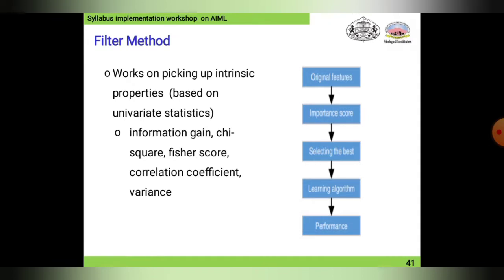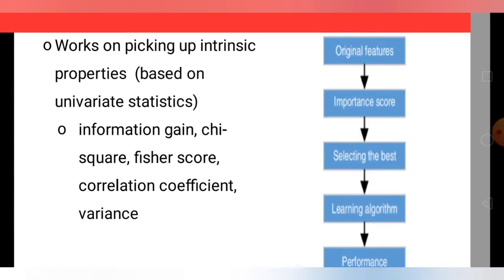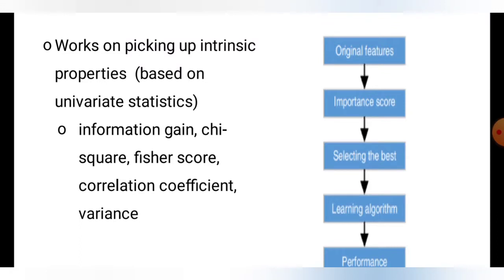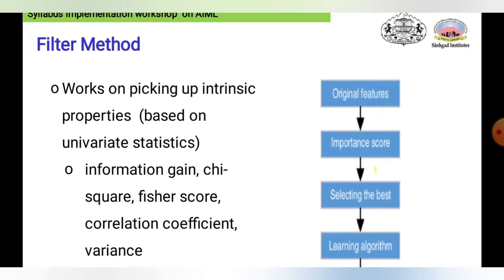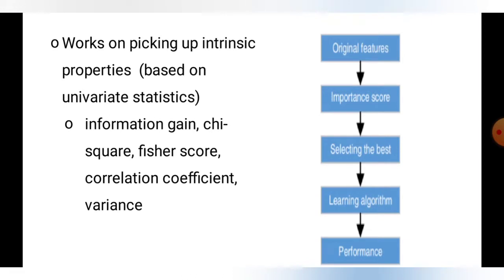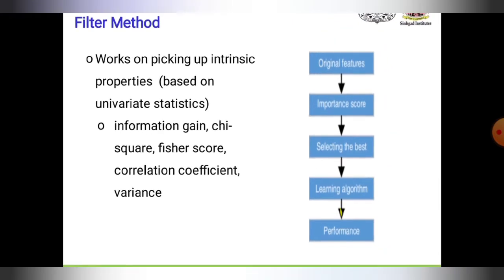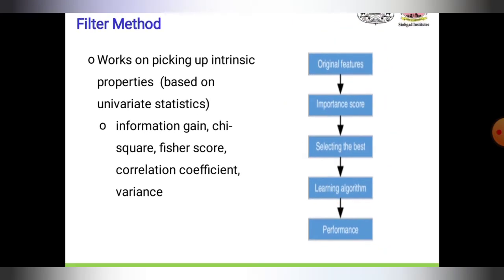The filter approach is based on univariate statistics such as information gain, chi-square, Fisher score, correlation coefficient, and variance. In the diagrammatic representation, the original features are correlated with an importance score. Based on this importance score, the best features are selected and passed to the learning algorithm, which is then used for performance evaluation.